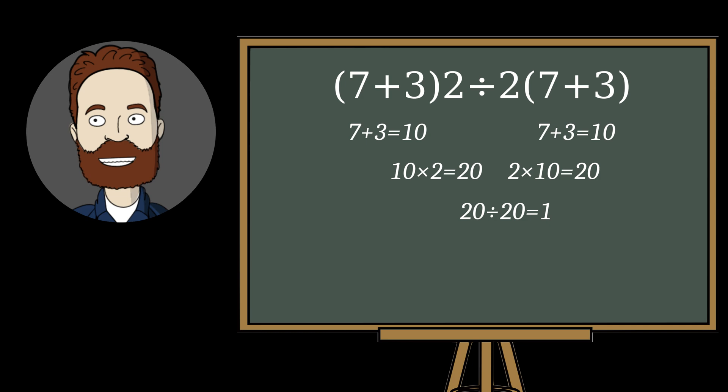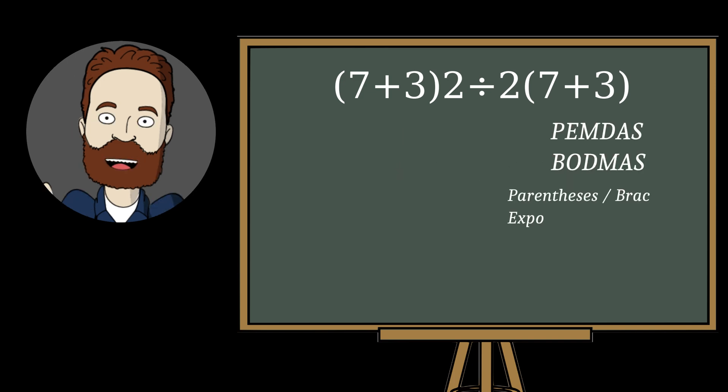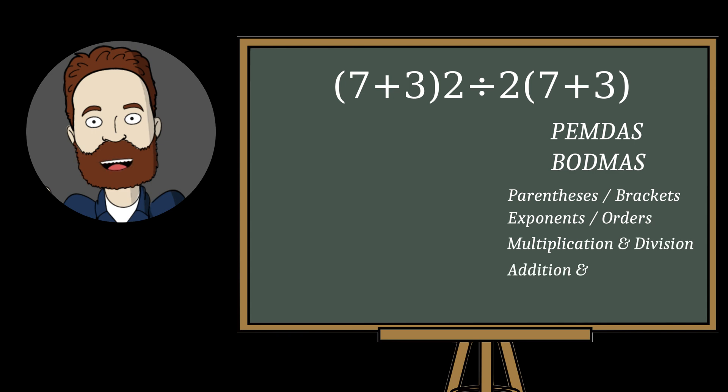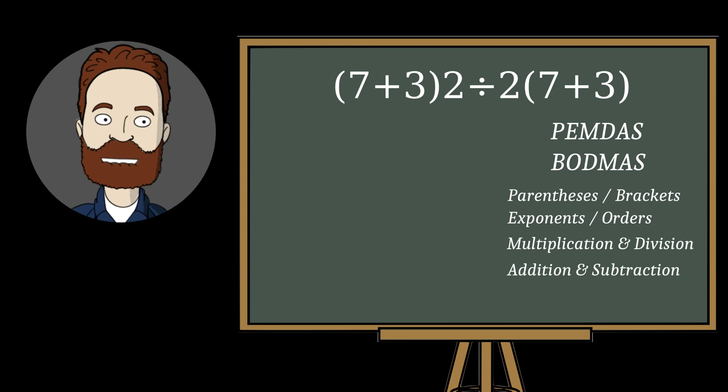At first glance, it seems quite logical to calculate everything in blocks, and then divide. But this is a mistake that's easy to avoid if you remember the order of operations. Without this rule, the expression can be interpreted in different ways, leading to different results.